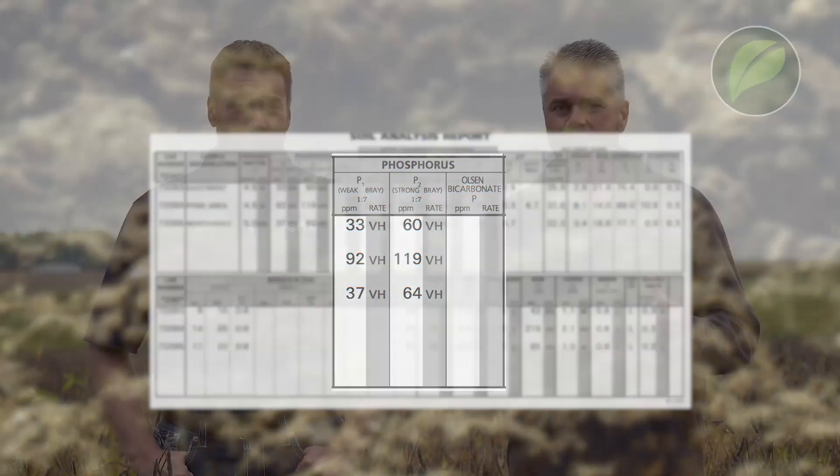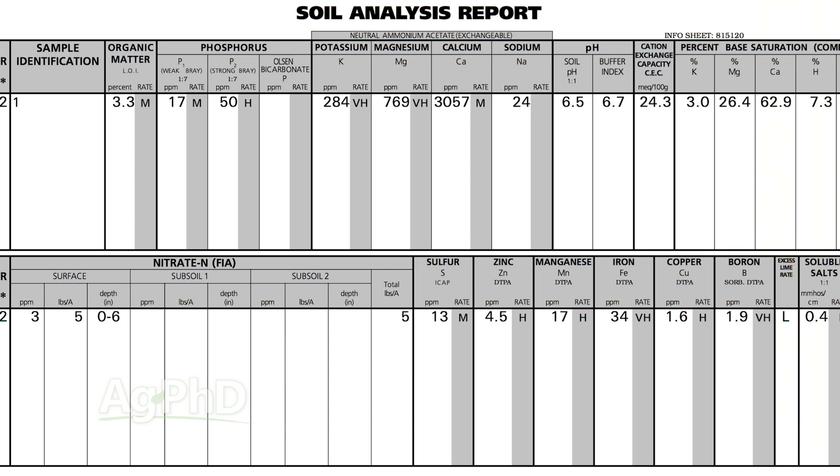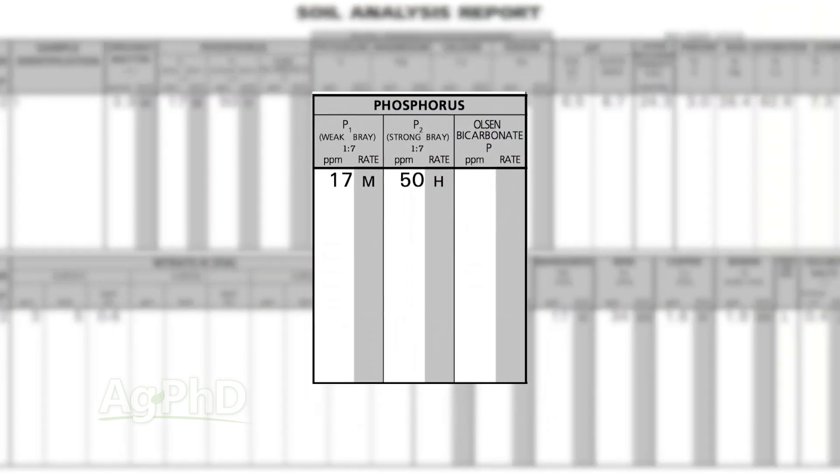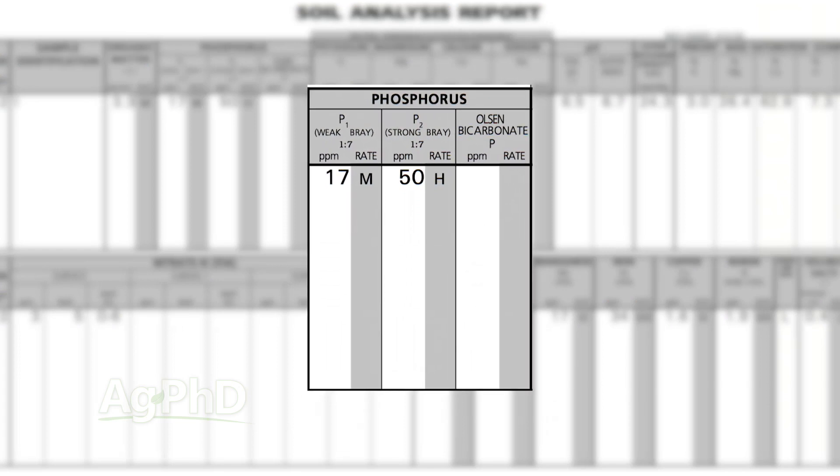Over the last few months Darren and I have been talking to farmers all over the country who say they've got to cut costs. But here's the problem: what you cut could actually hurt your bottom line, not help it. The key is understanding what you should cut and what you shouldn't. The best thing to do in terms of fertility is take a look at a soil test. One of the most important things on a soil test is the measure of phosphorus — the amount of phosphorus you have in your soil. There are different types of phosphorus tests and it can get a little complicated, so we want to talk through that today.